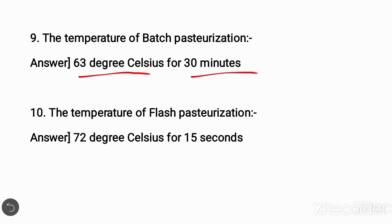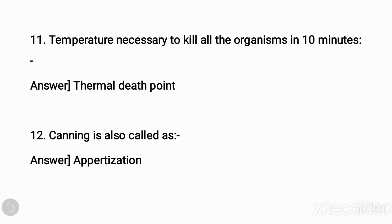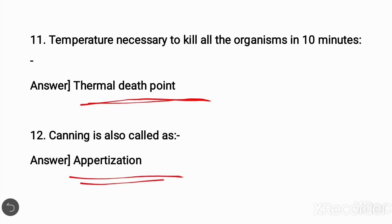Tenth question: the temperature of flash pasteurization is 72 degrees Celsius for 15 seconds. Eleventh question: temperature necessary to kill all the organisms in 10 minutes is called thermal death point. Twelfth question: canning is also called? Answer: appertization.